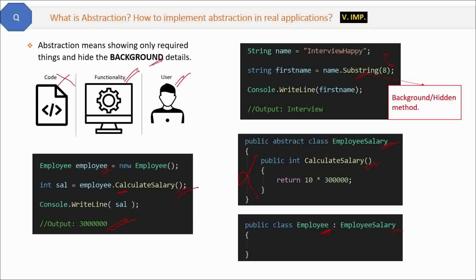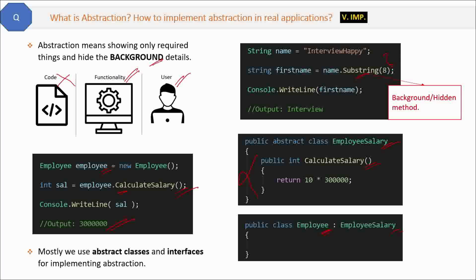The benefit of abstraction is that it makes your program more secure and more structured. We can implement abstraction in many ways, but mostly we use abstract classes and interfaces.